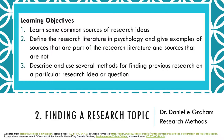Finding a research topic. The learning objectives for this section are: learn some common sources of research ideas; define the research literature in psychology and give examples of sources that are part of the research literature and sources that are not; and describe and use several methods for finding previous research on a particular research idea or question.